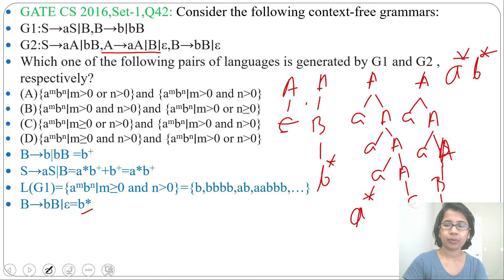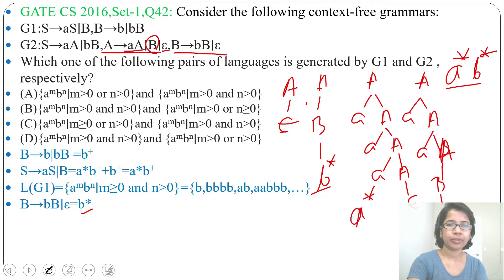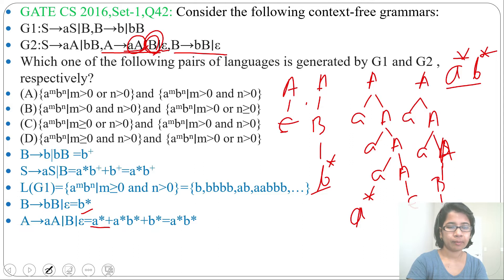You can generate only B Kleene closure when you derive B from A and apply B's rule. You can generate only A Kleene closure when from A you derive AA and epsilon. You can generate A Kleene closure followed by B Kleene closure when you use both derivations AA and B. So the regular expression is A Kleene closure plus A Kleene closure B Kleene closure plus B Kleene closure, which simplifies to A Kleene closure B Kleene closure.